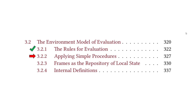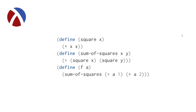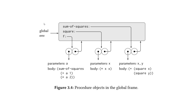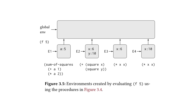This brings us to the second subsection 3.2.2: applying simple procedures. This is just going to be a more complicated version of what we just saw. Here we have three different procedures: square, sum-of-squares, and f — these come from one of the earlier sections in chapter 1. Looking at the visualization, we now have three different procedures in our global environment, each made up of the parameters and body of the corresponding definitions we saw.